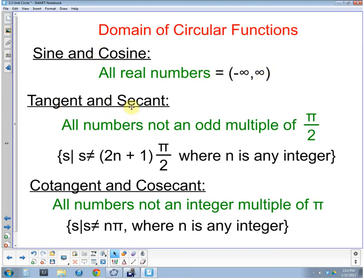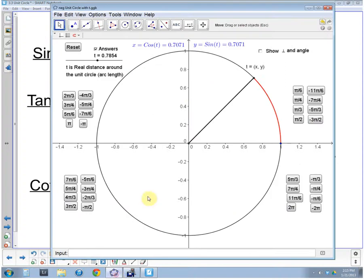Now tangent, secant, those have problems when we are dividing by zero. And in just a simple way of looking at it, any number that's not an odd multiple of pi halves we're allowed to put in. So let's look at what the problem is with pi halves. So if we look here at pi halves, we've rotated up pi halves. So we've walked along here pi halves. Pi halves refers to the 90 degrees.